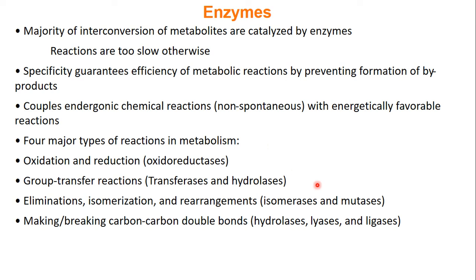In metabolism, we're really going to see just four types of reaction. We will see redox reactions, which are carried out by oxidoreductases. We'll see group transfer reactions, which are done by transferases and hydrolases. We'll see eliminations, isomerizations, and rearrangements, which are carried out by isomerases and mutases. And we're also going to see the making and breaking of carbon double bonds, which can be carried out by hydrolases, lyases, and ligases.